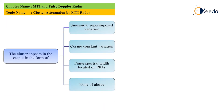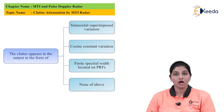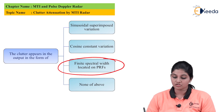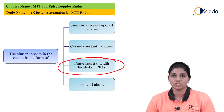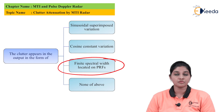The next question is: the clutter appears in the output in the form of — option A: sinusoidal superimposed variation; option B: cosine constant variation; option C: finite spectral width located on PRF (pulse repetition frequency); option D: none of the above. The clutter appears in the output in the form of finite spectral width located on the pulse repetition frequency, so option C is correct.